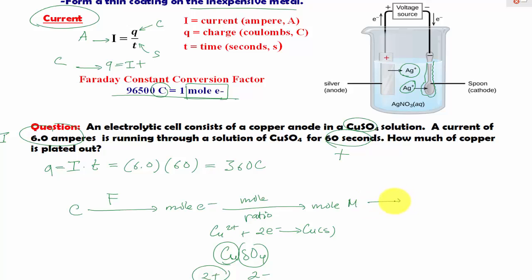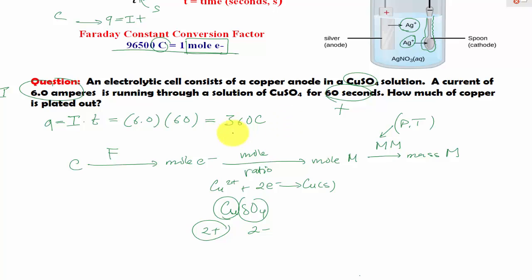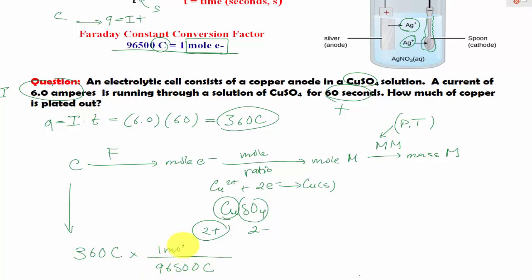Once we have our moles of metals, the rest is pretty easy to find the mass of metals, which is going to be just the molar mass from the periodic table. So let's go back to our problem. We have 360 coulombs. We can use the Faraday constant to solve for moles of electrons. The coulomb part must be on the bottom: 96,500 coulombs per 1 mole of electrons. The coulombs cancel out. Then from the half-cells, 2 moles of electrons equals 1 mole of copper solid.